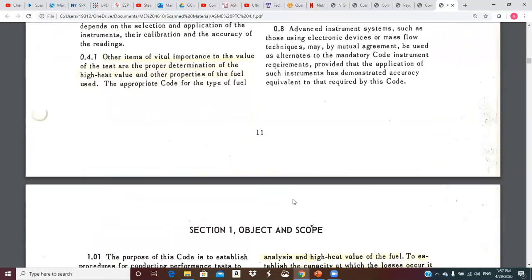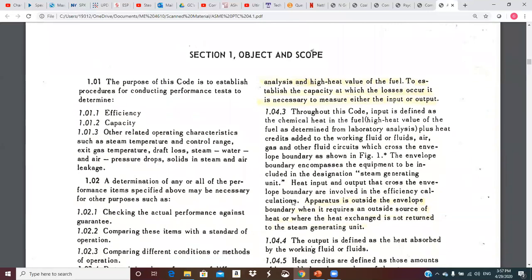The purpose of this code is to establish procedures for conducting performance tests to determine efficiency and capacity. So let's say you bought this $300 million boiler and your engineers didn't think it was operating as well, didn't have the efficiency, the capacity, or both. And you're anticipating trying to go back to the manufacturer and the contractor to do something about it. But how do you do a test?